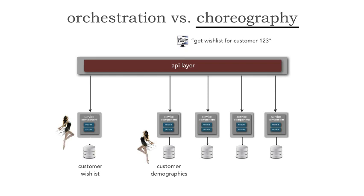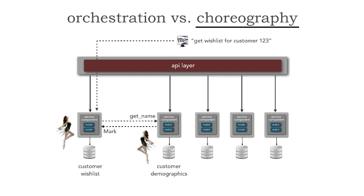In this particular case, we're only going after the wishlist service. However, the wishlist and demographics are going to act as dancers, communicating and collaborating with themselves. Notice there's no central conductor here, because that request comes singly into the customer wishlist. The customer wishlist has most of the information, but unfortunately needs the name of the customer. The wishlist data does not contain the customer name, only the ID. So through choreography, like the dancers, these two services communicate between themselves. The wishlist asks the customer demographics to get the name, and the wishlist returns the name. The information is compiled, aggregated, and then sent back to the HTTP client. This is an example of choreography — the services, like dancers, are communicating between themselves.